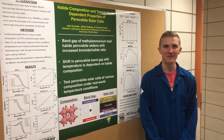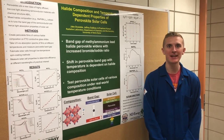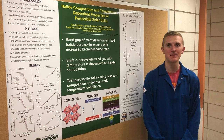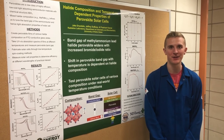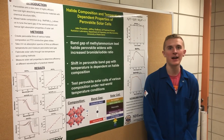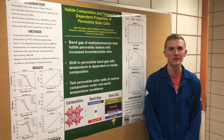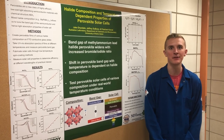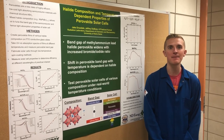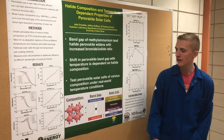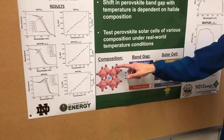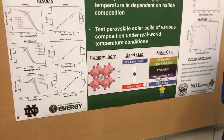My name is Jake Drysdale and I'm investigating the halide composition and temperature dependent properties of perovskite solar cells. Perovskites are a new class of highly efficient, low-cost, light absorbing materials for use in solar cells that have chemical structure ABX3, shown here, where A is a cation, B is a metal, and X is a halide.